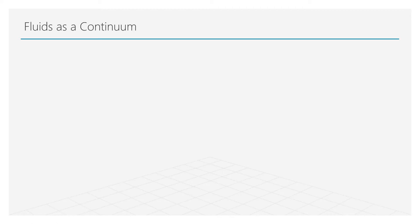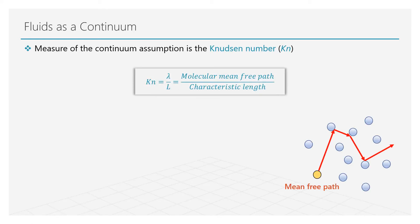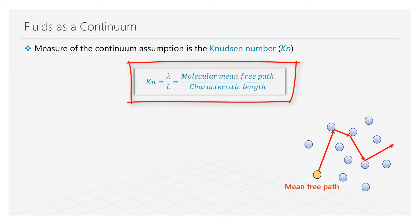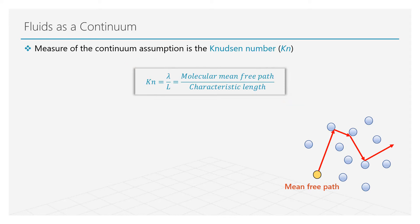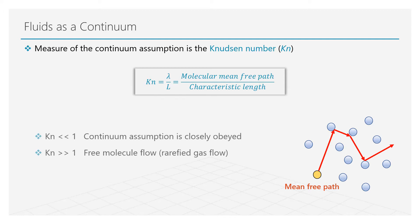The assumption of treating fluid as a continuous medium is commonly referred to as fluid continuum. The measure of this assumption is provided by a dimensionless number called the Knudsen number, defined as the ratio of molecular mean free path to the characteristic length scale of the problem. Molecular mean free path refers to the average distance travelled by a fluid molecule between successive collisions. If the length scale is much larger than the mean free path, fluid continuum is valid.